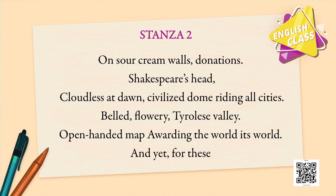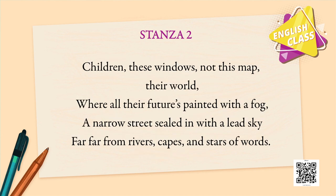Let us move on to stanza 2. 'On sour cream walls, donations, Shakespeare's head, cloudless at dawn, civilized dome riding all cities, belt, flurry, Tyrolese valley, open-handed map, awarding the world its world. And yet, for these children, these windows, not this map, their world, where all their futures painted with a fog, a narrow street, sealed in with a lead sky, far, far from rivers, capes, and stars of words.'